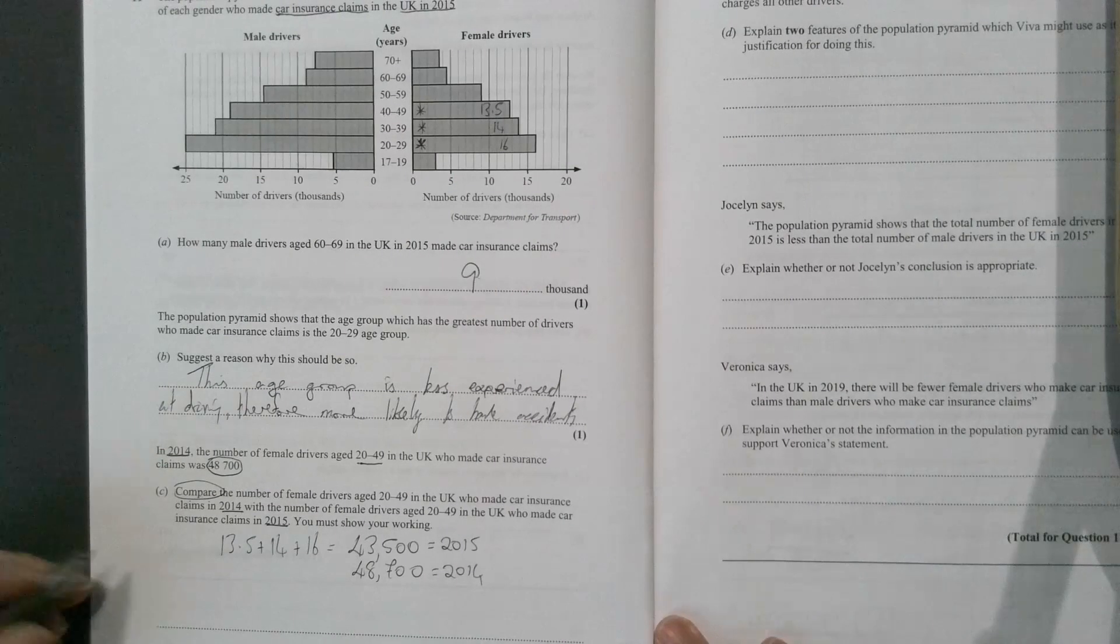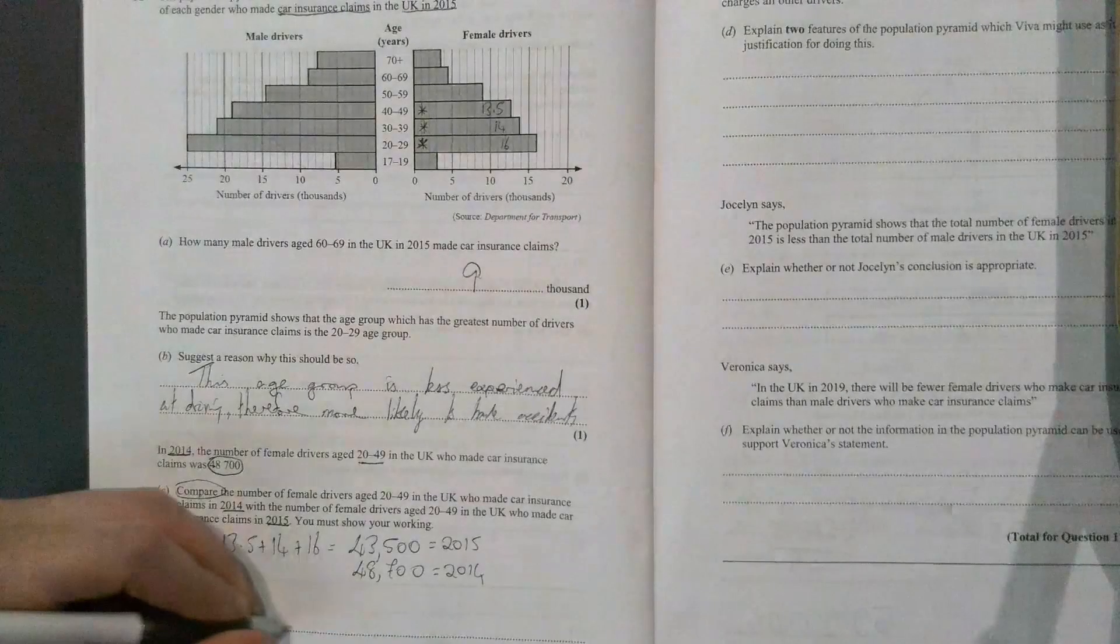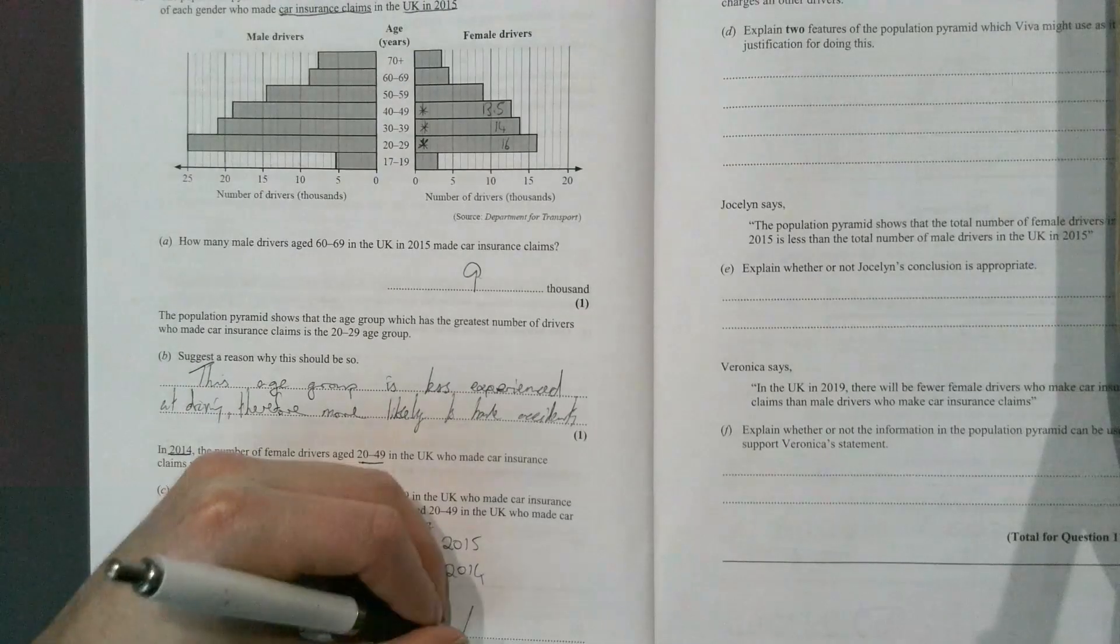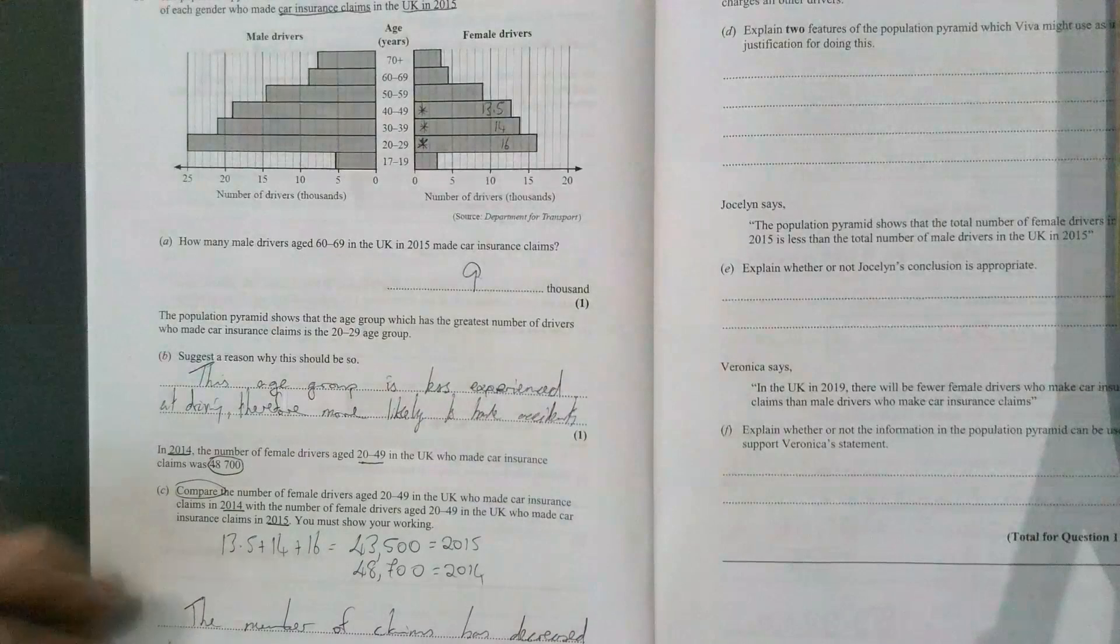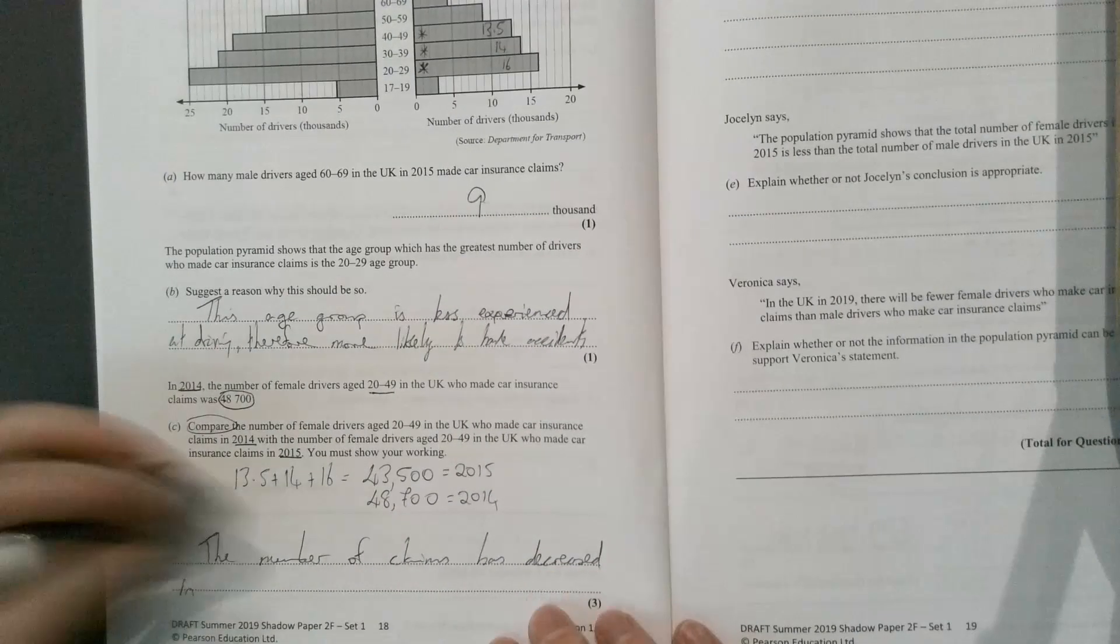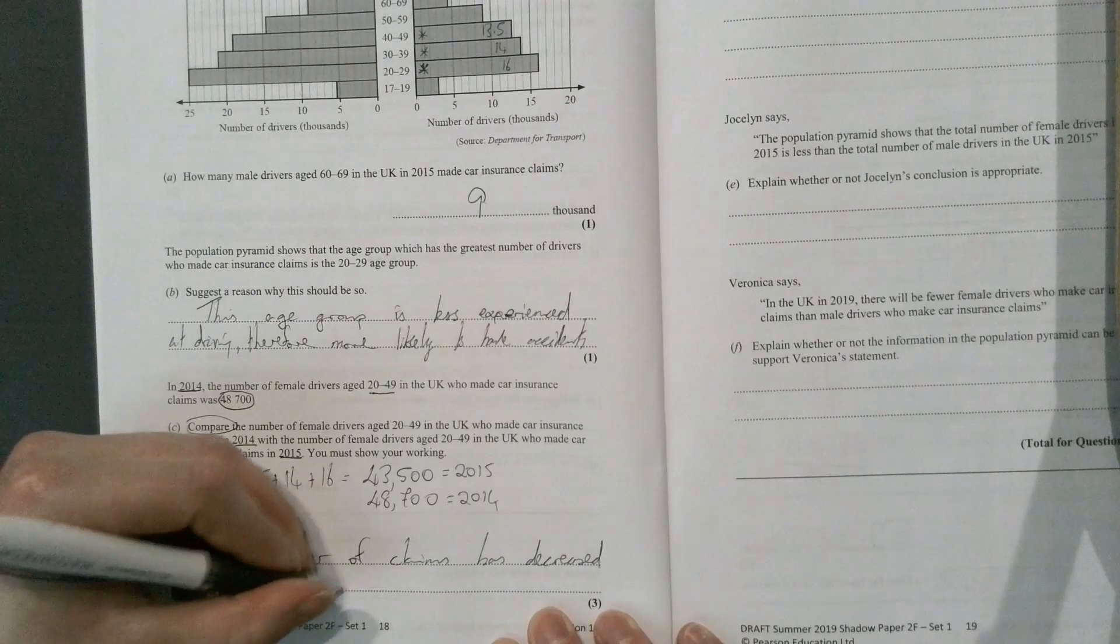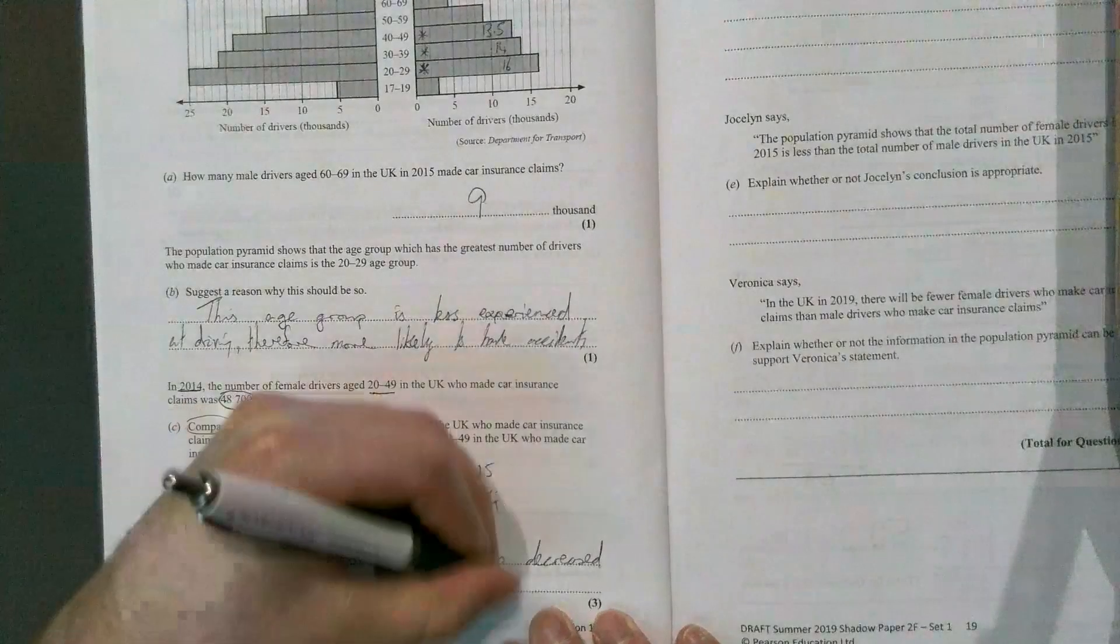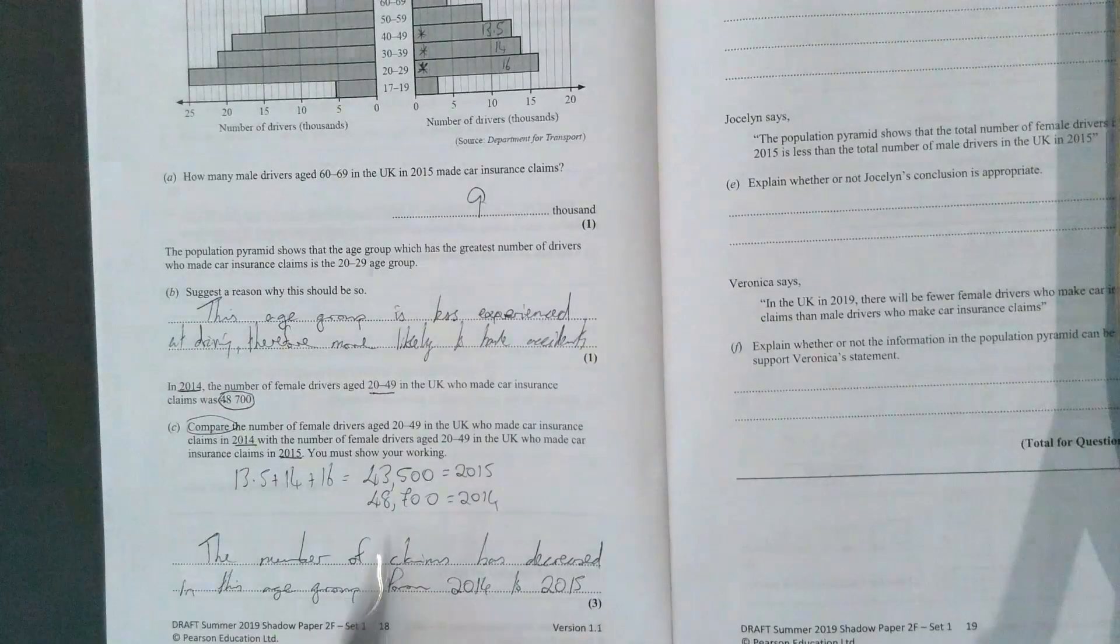So state a conclusion on it. What we would say is the number of claims has decreased in this age group from 2014 to 2015, and we've got our numbers here to back it up.